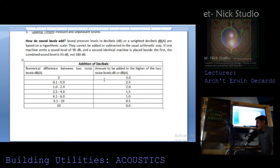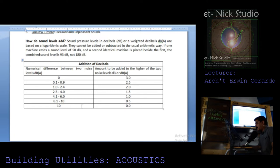The amount added to the higher of the two noise levels depends on their difference. The more accurate method: if the range is 0, add 3; from 0.1 to 0.9, add 2.5; from 1 to 2.4, add 2; from 2.5 to 4, add 1.5; from 4.1 to 6, add 1; from 6.1 to 10.5, add 0.5; and if greater than 10, the value is 0.